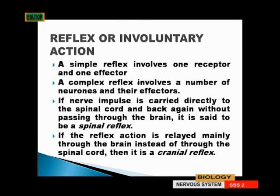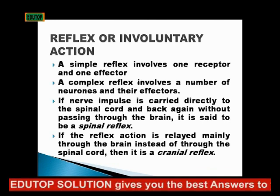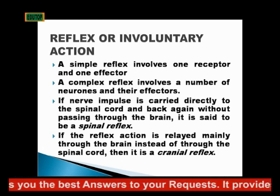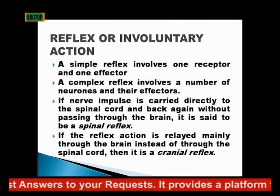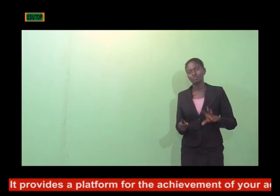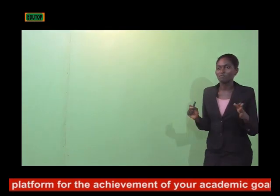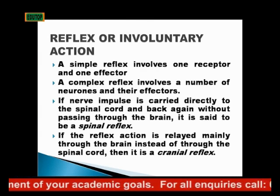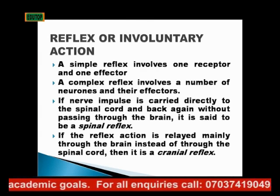A simple reflex involves one receptor and one effector, but a complex reflex involves a number of neurons and their effectors, or a number of receptors and their effectors. If a nerve impulse is carried directly to the spinal cord and back again without passing through the brain, we call that a spinal reflex. If the reflex action is relayed mainly through the brain instead of the spinal cord, we call it a cranial reflex.